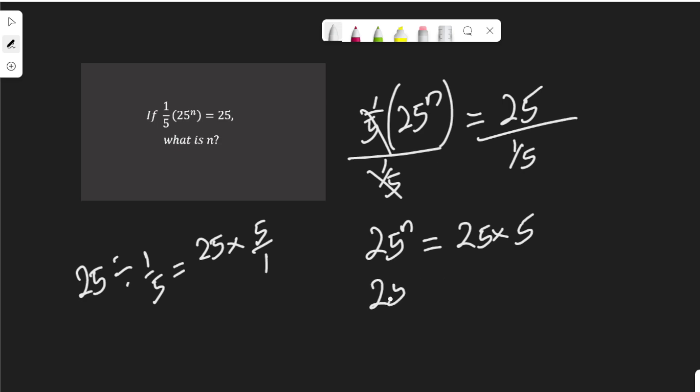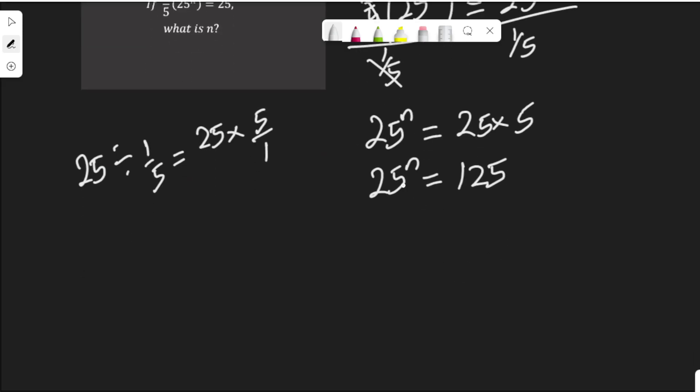So 25 to the power of n, and 25 times 5 is 125. Expressing each of these in base 5: 25 is 5 squared, multiply by n, that is 2n. And 125 is 5 to the power of 3.